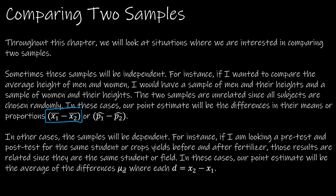In those cases our point estimate will either be the difference of two means or the difference of two proportions — again, those would be independent because there's not going to be any sort of relationship between the two samples. Now in other cases we are going to have dependent samples, and quite often with dependent samples we call that paired data. For example, you took a pretest, then took a course, then took a post-test. Hopefully by the end of the course your score would be better. Because it's you taking the test at the beginning and you taking the test at the end, those test scores are related to one another.